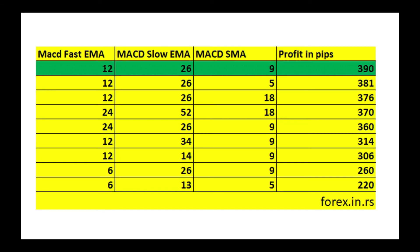Now for the 30-minute chart results: you can see very similar results, but the best results are for 12, 26, and 9. We created various combinations using 12, 24, and 6 for fast EMA; 26, 52, 34, and 13 for slow EMA; and 9, 5, and 18 for the MACD SMA. We interviewed traders about which settings they use and created 9 combinations that we tested in our case study.